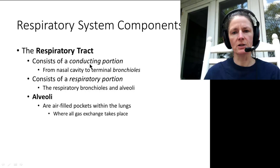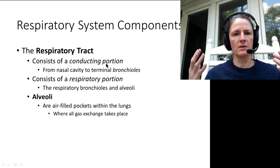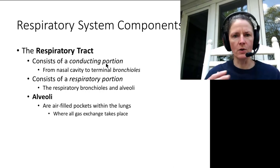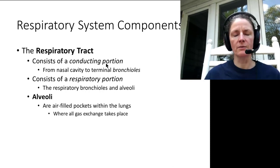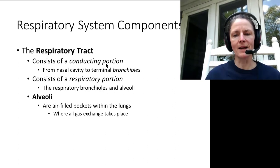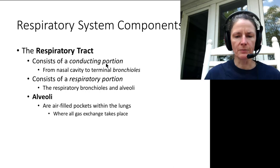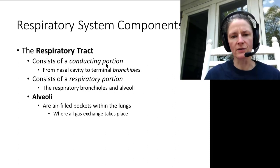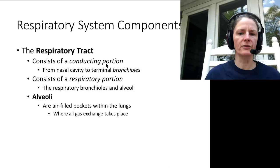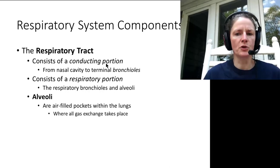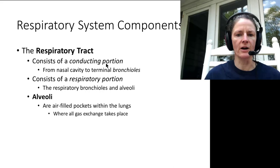The respiratory tract has a conducting portion that leads air into the lungs with no gas exchange occurring there. Then we have the respiratory portion where exchange of air across surfaces occurs. This involves mainly alveoli — sac-like structures within the lungs with very thin simple squamous epithelium fused with the basement membrane of surrounding capillaries for rapid gas exchange. We also have respiratory bronchioles leading up to the alveoli where some exchange can occur.